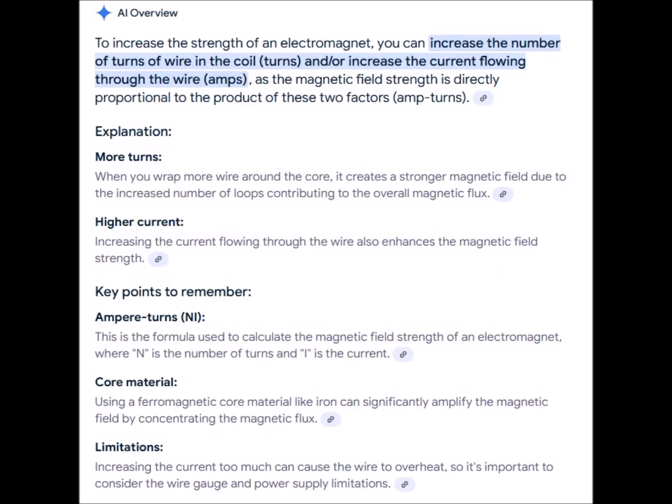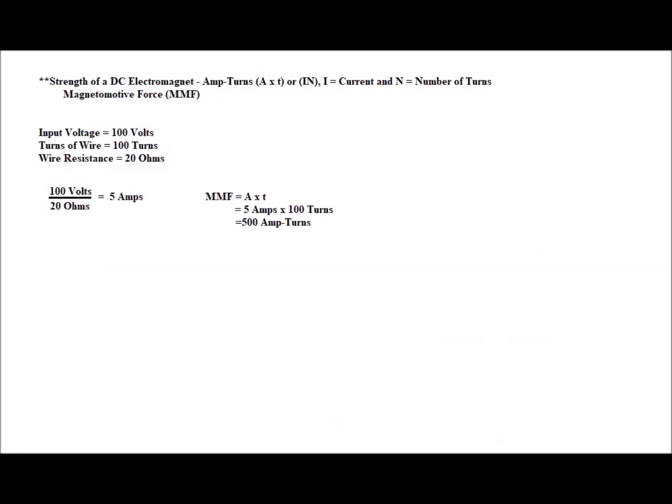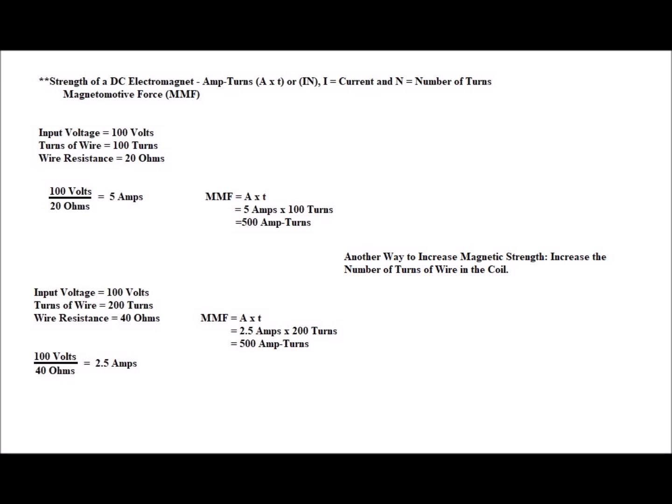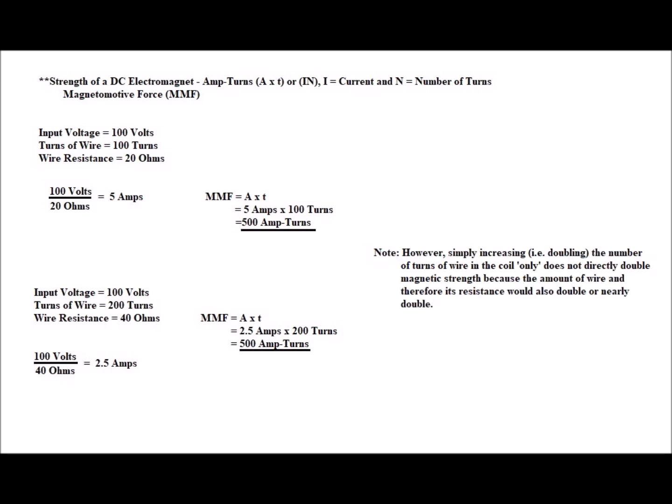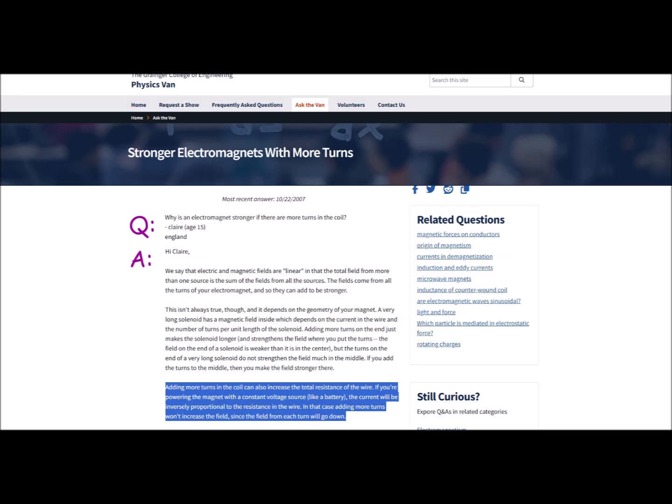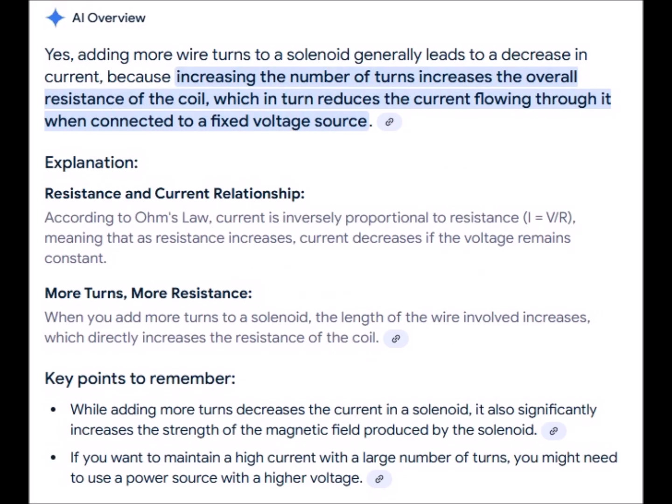Increasing the number of turns in the coil is often also cited as a means to amplify magnetic strength. However there is one caveat to this method: increasing the turns of wire means using more wire and hence it results in increased resistance and lower circulating current.